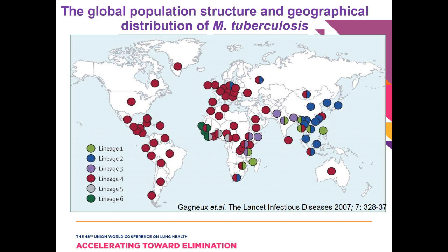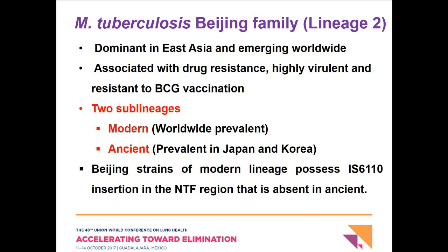Different countries have different lineages, based on large-sequence polymorphisms of mycobacterium tuberculosis. I'm going to talk about the mycobacterium Beijing family, which is prevalent in East Asian countries and now emerging worldwide. This Beijing family is of particular interest to clinicians and researchers because it is associated with drug resistance, is highly virulent compared to other lineages, and can escape BCG vaccination. So prevention of TB due to the Beijing family is very difficult and challenging.